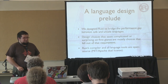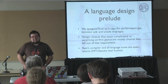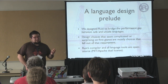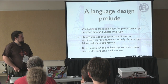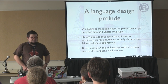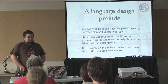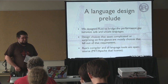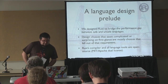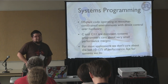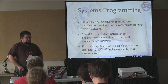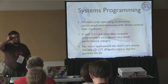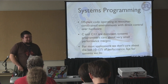We designed Rust to bridge the performance gap between safe and unsafe languages. When I say unsafe, I'm mostly talking about C and C++, and when I say safe, I'm talking about pretty much everything else — Java, Haskell, ML, Ruby, Python. If anything about Rust seems surprising or complicated at first, I hope to convince you that it's mostly a choice that fell out of the requirement to provide both safety and good performance. Rust's compiler and all its tools are open-source, dual-licensed under MIT and Apache. The domain we're working in is systems programming, which refers to writing efficient code in resource-constrained environments where you're interfacing with hardware quite closely.